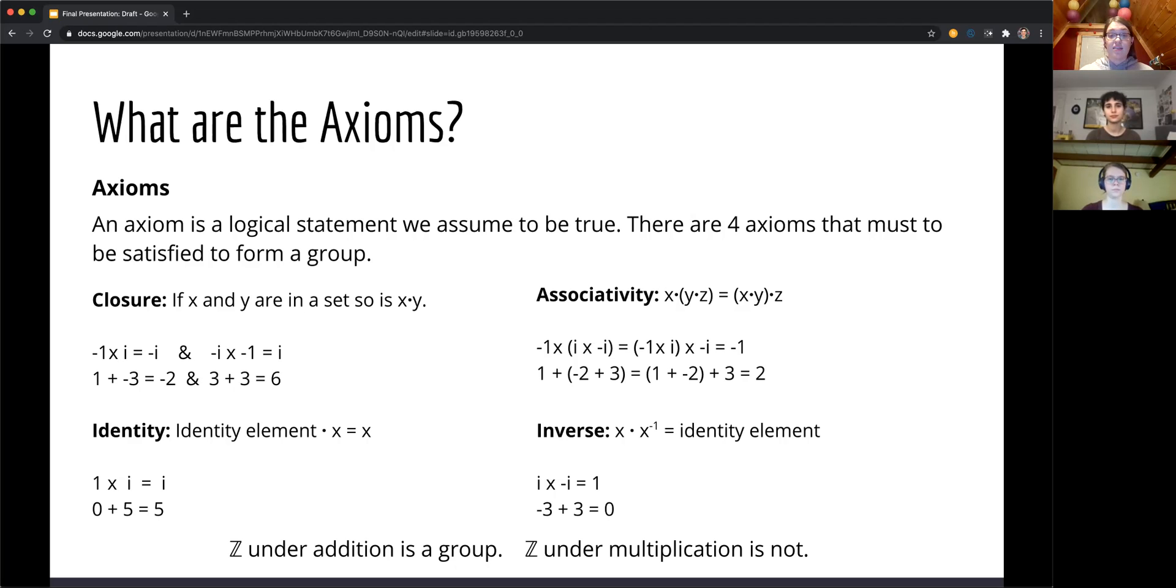Associativity is the axiom that states that the order of operations does not matter. For example, negative 1 times i times negative i, where i and negative i are inside parentheses, is the exact same thing as when negative 1 and i are in parentheses and multiplied by negative i. It's still negative 1.